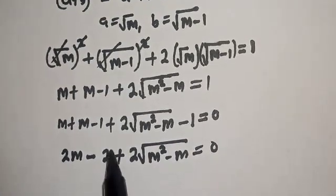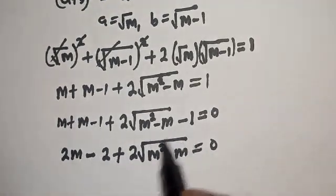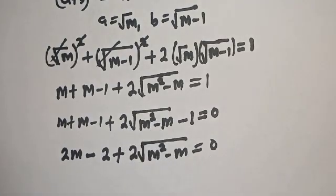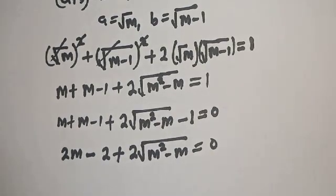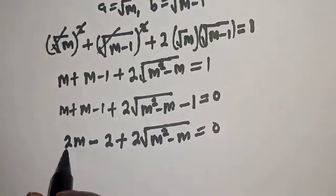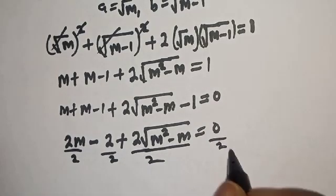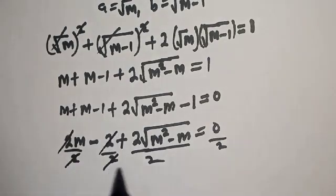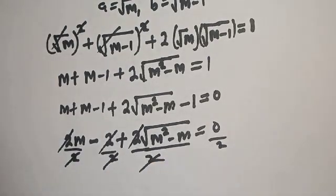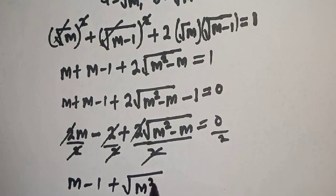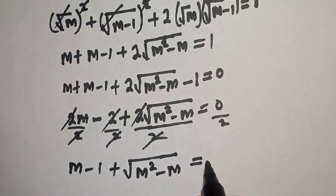Here m plus m is 2m, and we have minus 1 minus 1 giving minus 2, so 2m minus 2 plus 2 times square root of m squared minus m is equal to 0. Dividing everything by 2, we get m minus 1 plus square root of m squared minus m is equal to 0.